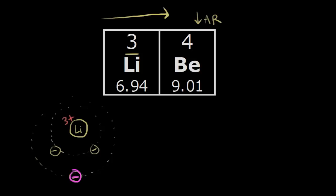The outer electron would be pulled closer to the nucleus because the nucleus is positively charged and that electron is negatively charged. At the same time, those negatively charged inner shell electrons are going to repel it — like charges repel. So the nucleus attracts the outer electron, and the inner shell electrons repel the outer electron. We call this shielding, because the inner shell electrons are shielding that outer electron from the pull of the nucleus. This is called electron shielding, or electron screening.